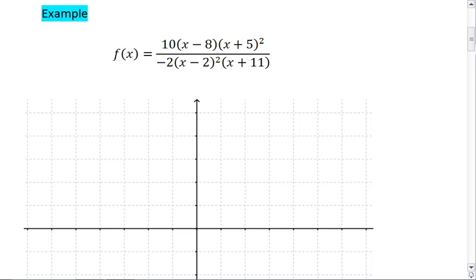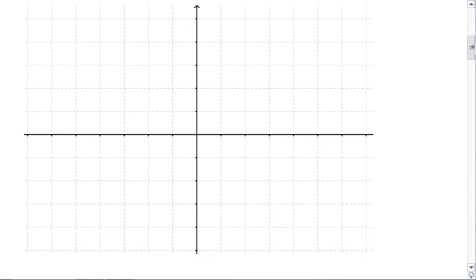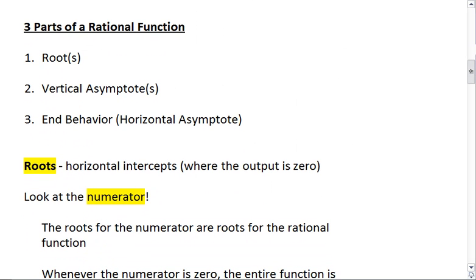As we go through these videos, we'll sketch the graph for this polynomial. We'll just do it one piece at a time. There are three parts that we focus on for the rational function when we're sketching the graph. The first is roots, then vertical asymptotes, and finally end behavior, which includes horizontal asymptotes.